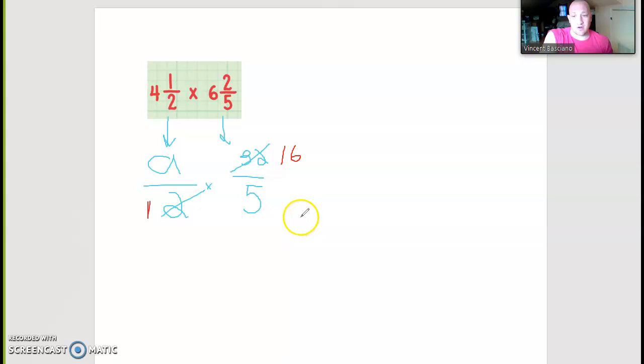Now we are ready to multiply. I did our multiplication, nine times sixteen is 144, one times five is five.